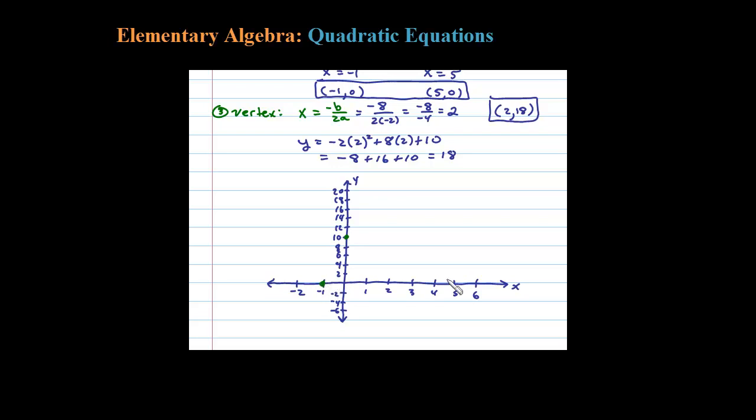(-1, 0) was our x-intercept and we had another x-intercept over here (5, 0). And then (2, 18) was my vertex. So you could see the rough sketch here is going to look like this parabola opening downward.